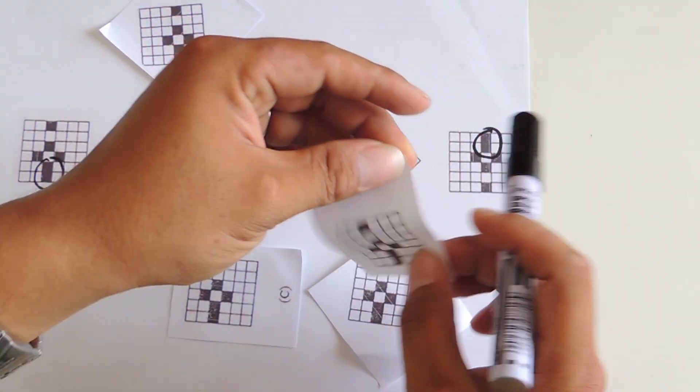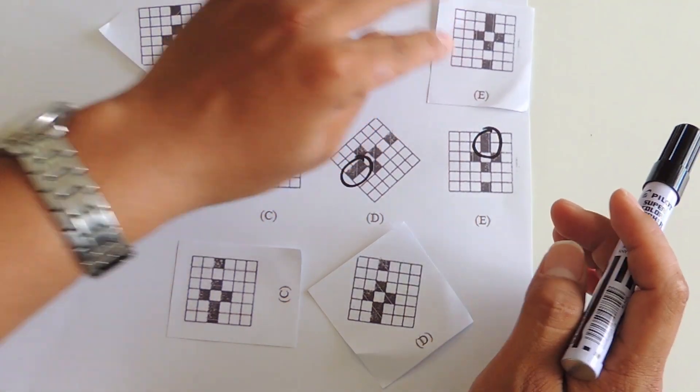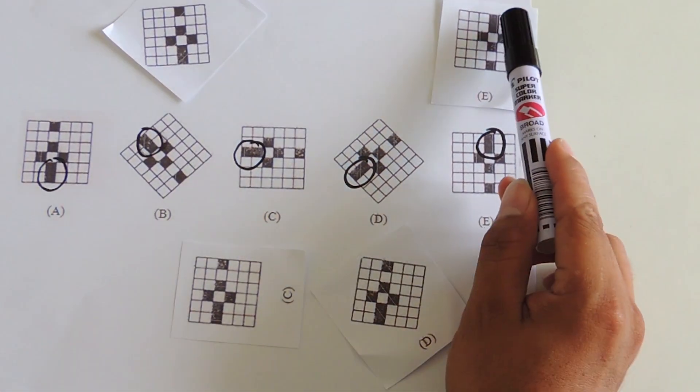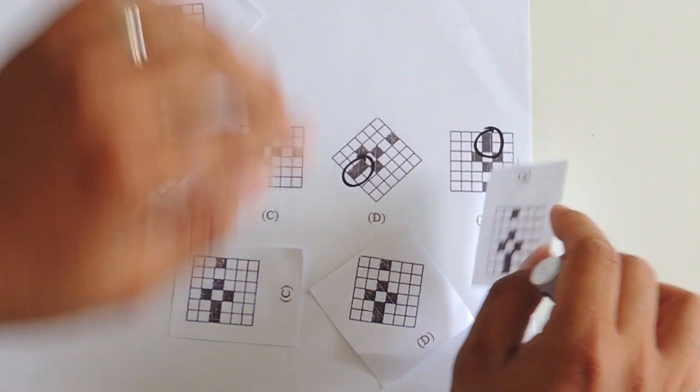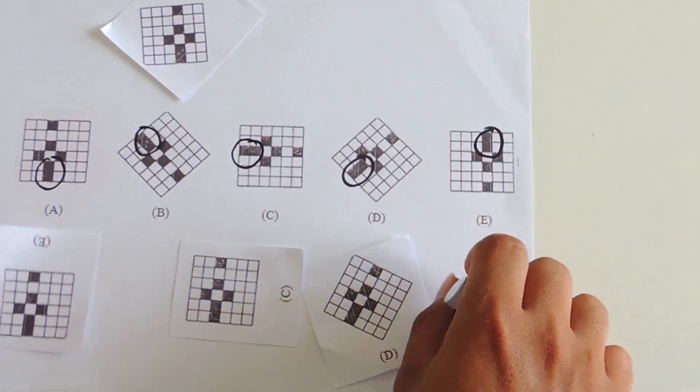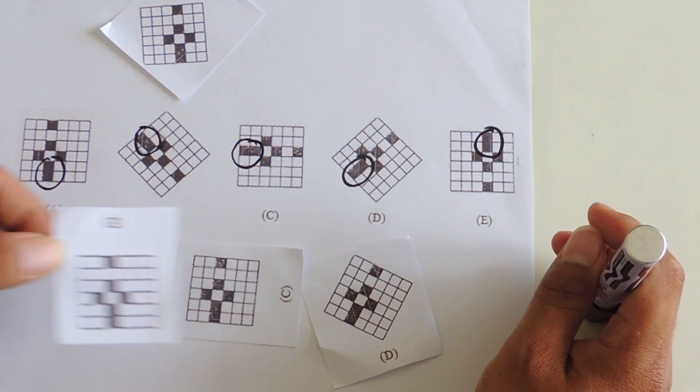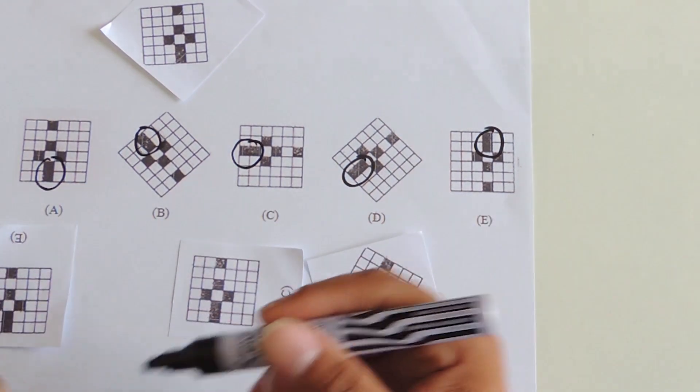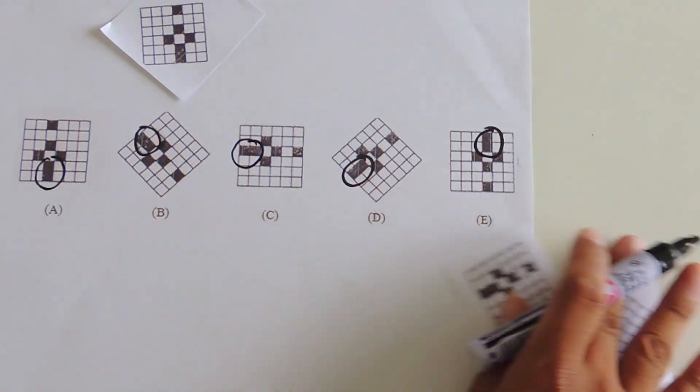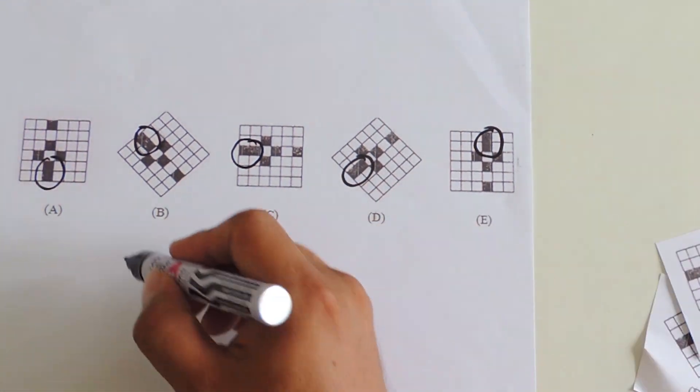Option E: positioning these two squares at the bottom will give us a figure the same as A, C, and D. Therefore, the obvious answer is option B.